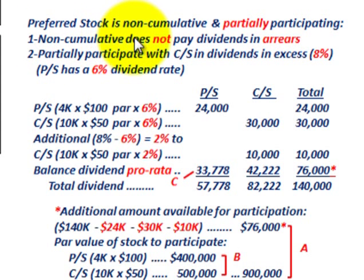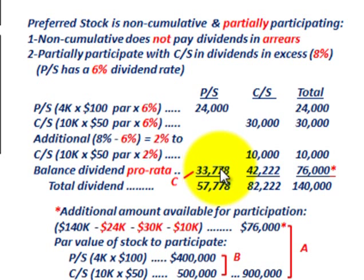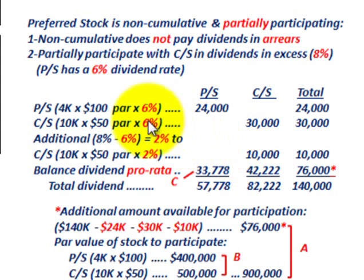For non-cumulative preferred stock, it does not pay out any dividends in arrears, so we don't have to be concerned with those two years of dividends due. And for partially, it's going to partially participate with the common stock in dividends in excess of 8%. The preferred stock has a 6% dividend rate, so we take 4,000 shares × $100 par × 6%, which equates to $24,000 for preferred stock.